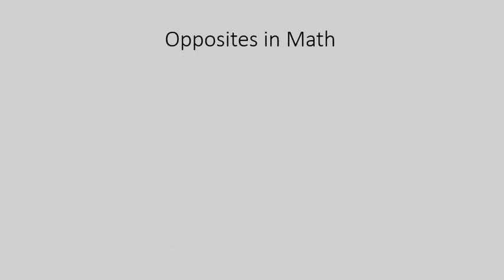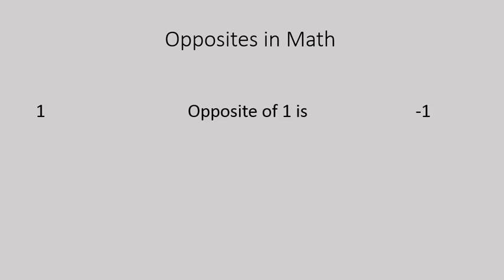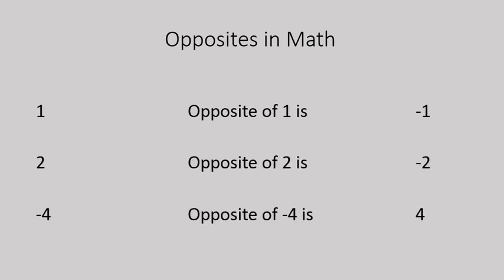Subtracting positive and negative numbers. We're going to talk a lot about opposites today. Here's an example of opposites: one is the opposite of negative one, two is the opposite of negative two. And the other way of saying that would be negative four is the opposite of positive four.